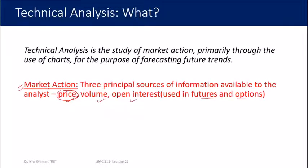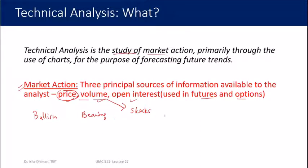That price information decides how the market is going to perform — whether it will rise, whether there will be a bullish trend or a bearish trend. Market action is decided by price and volume. Volume means the amount of stocks being bought and sold in a particular day or over a particular period of time. Technical analysis is a study of this market action to help predict future trends.